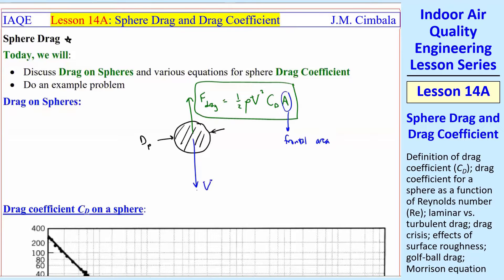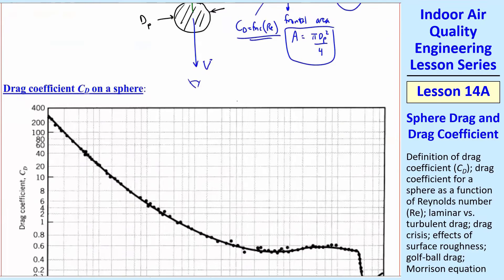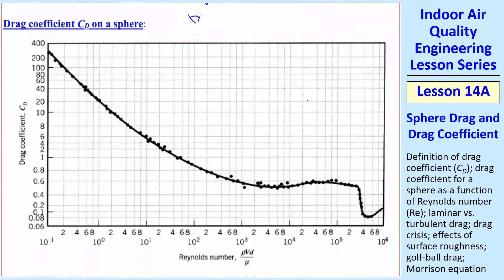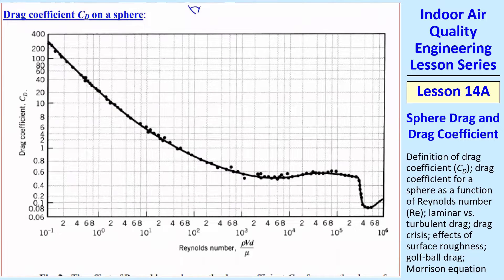Where a is the projected frontal area. In other words, the particle's coming right at you, so you're looking here from the bottom. What do you see? You see a circle of that same diameter, so the frontal area a is pi dp squared over 4. And then you can calculate the drag force if you know cd, and cd is a function of Reynolds number. Here are some data. This is kind of a famous plot of drag coefficient cd as a function of Reynolds number.